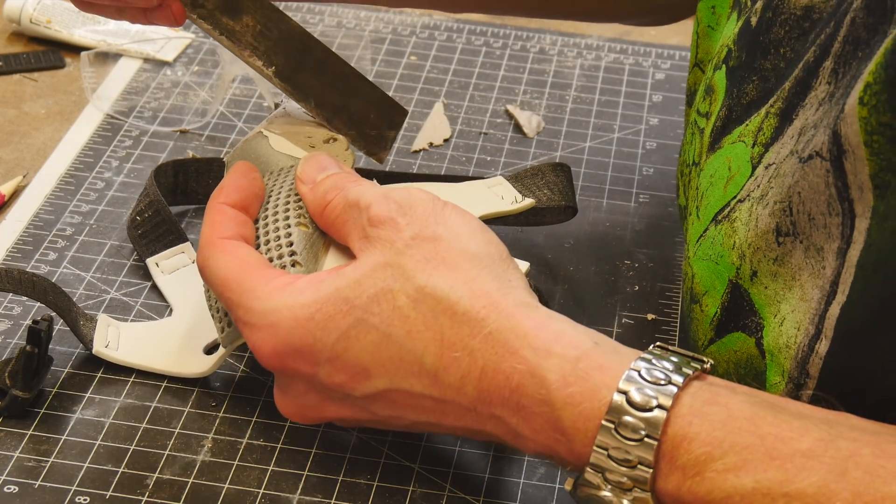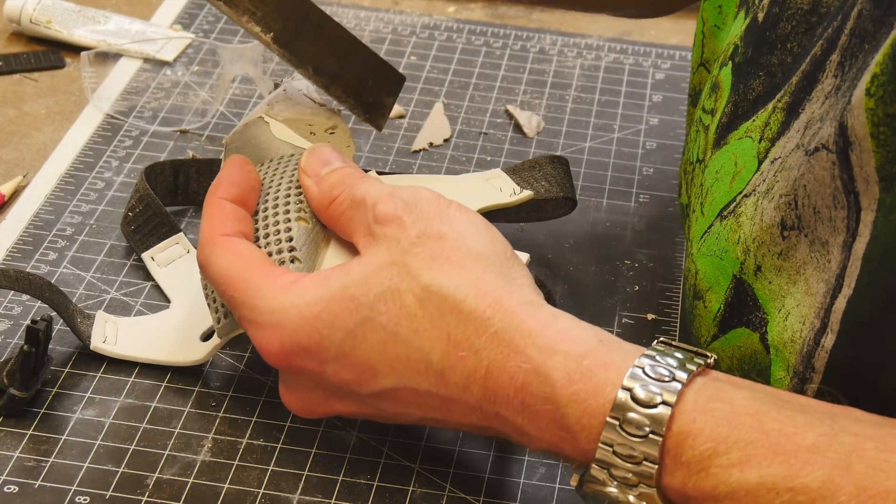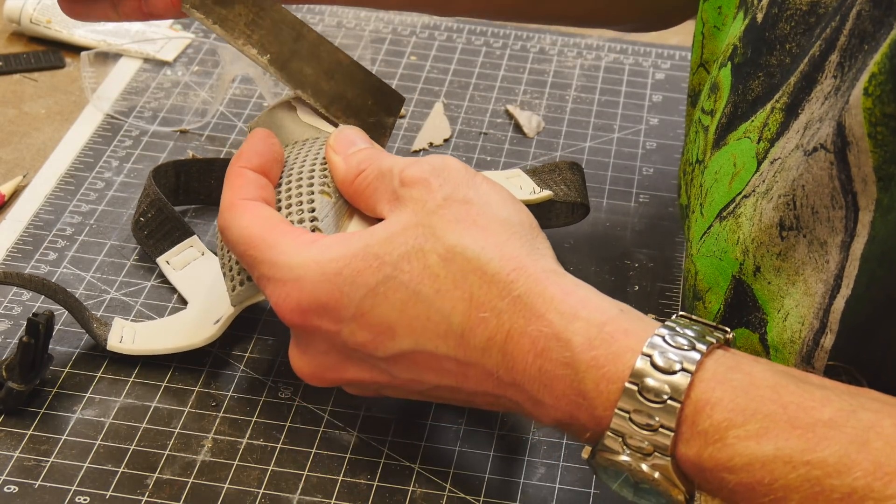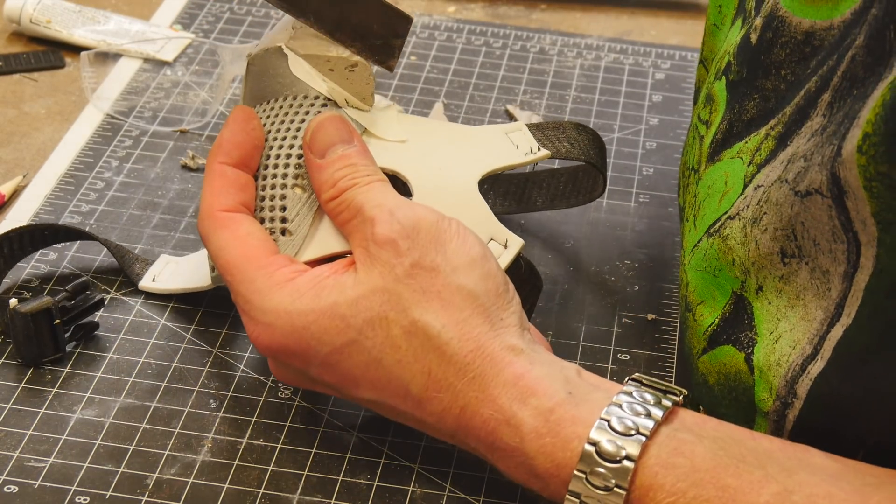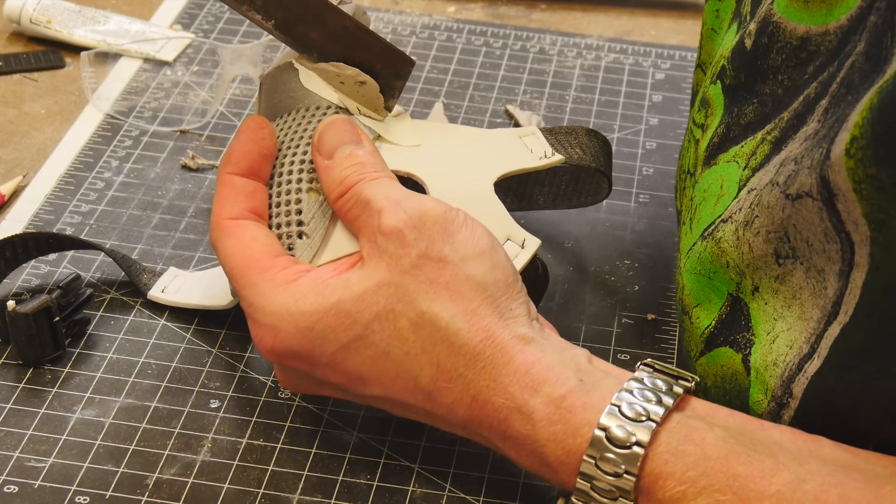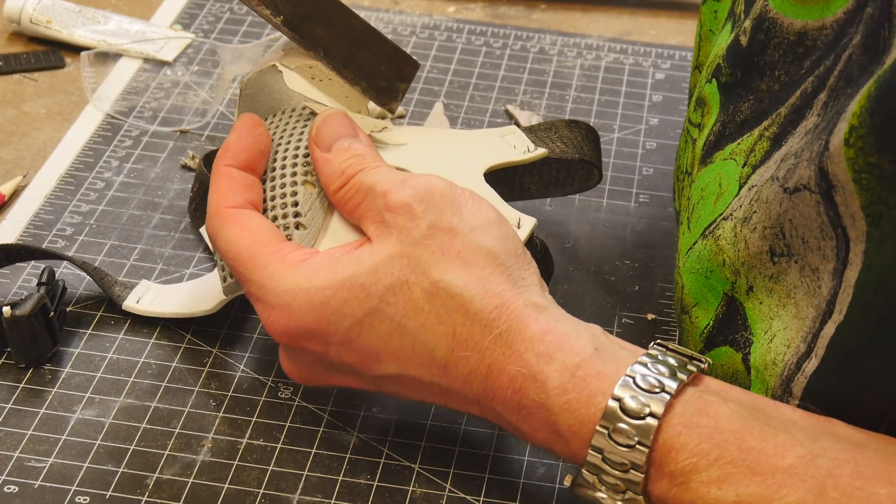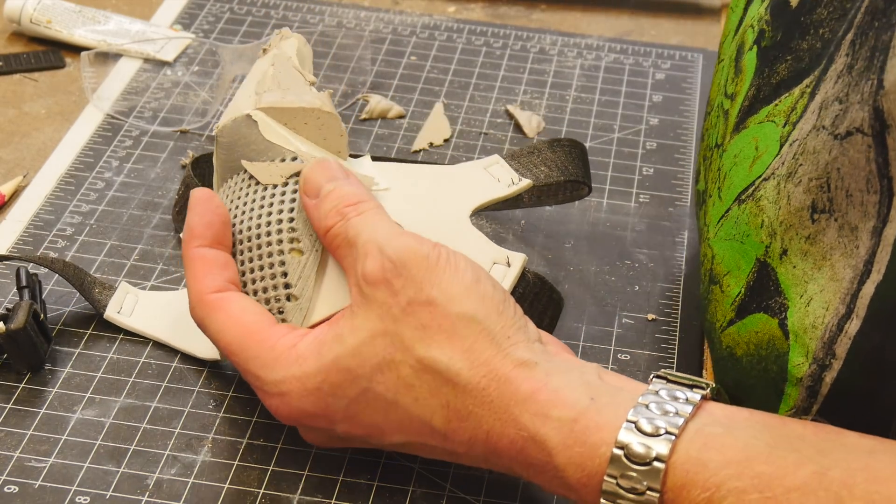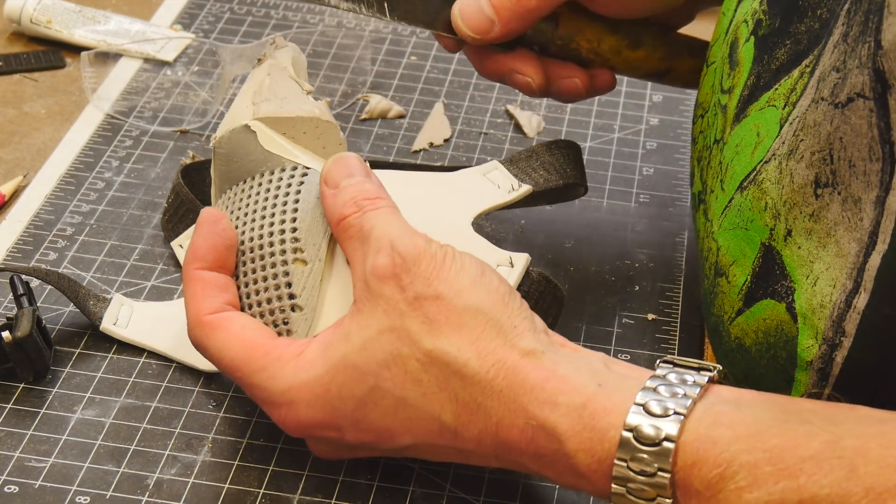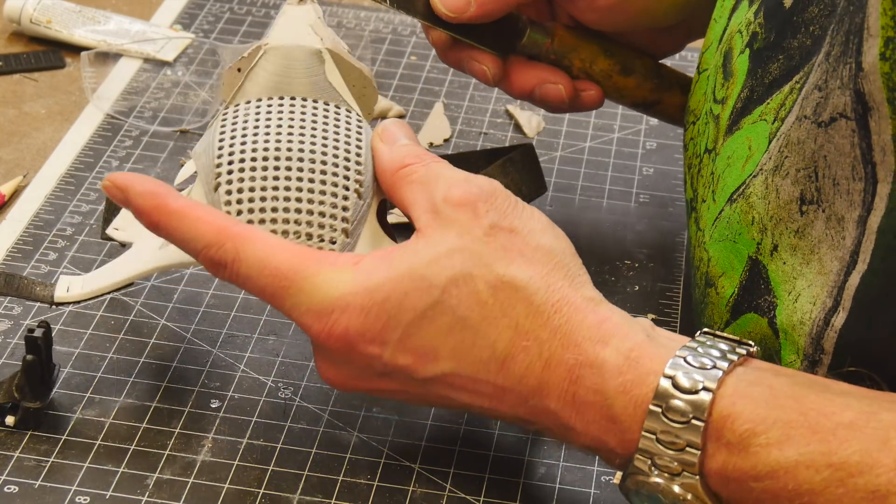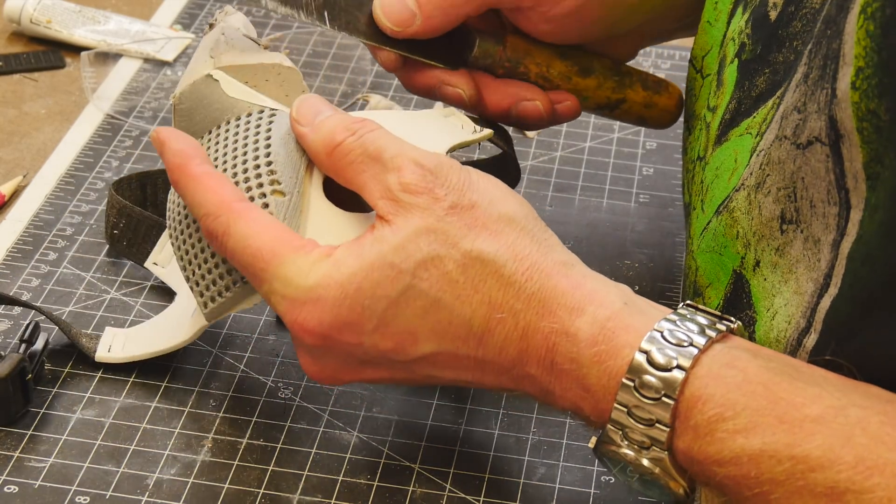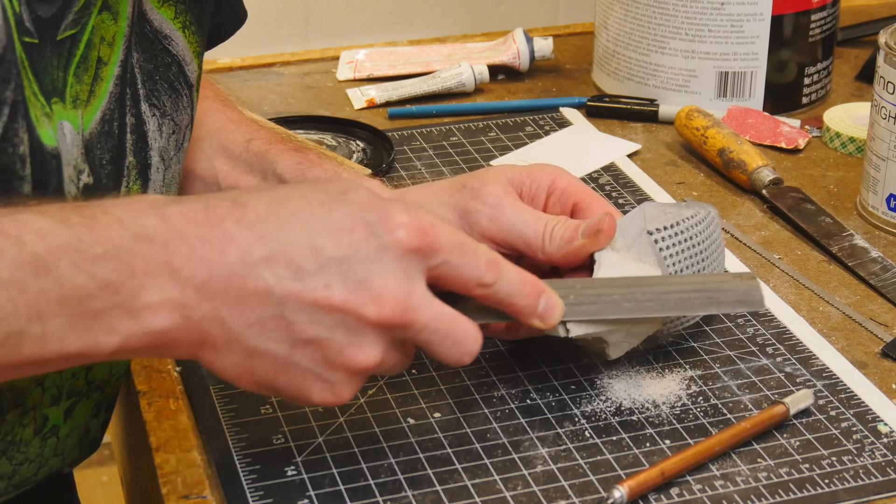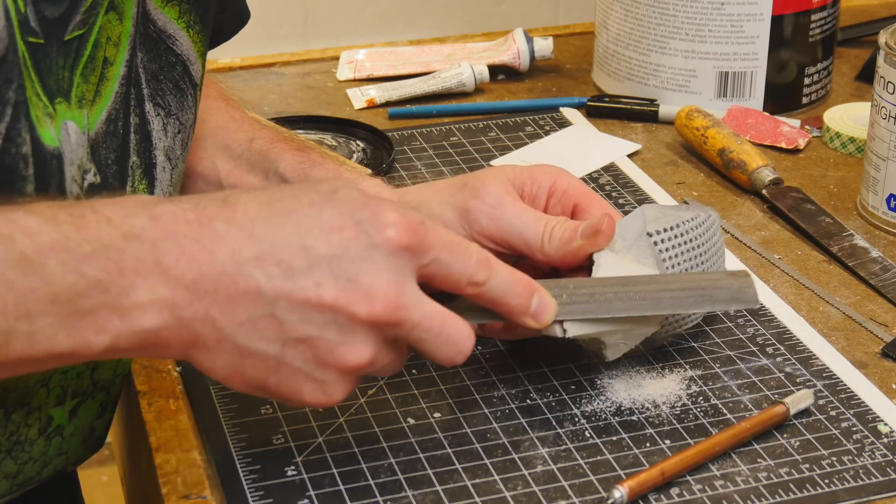When the body filler is still pretty soft it's super easy to sculpt it with a knife or a rough file. I have a piece of tape down on the PLA 3D printed parts so I don't get any polyester into the print lines.